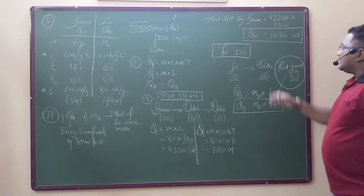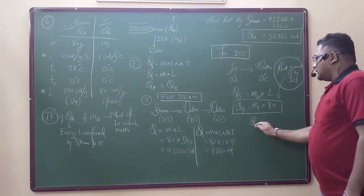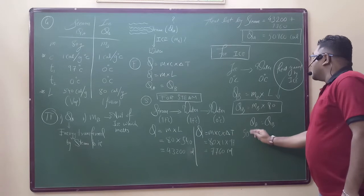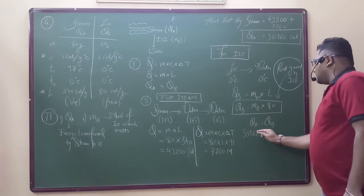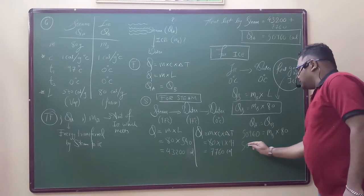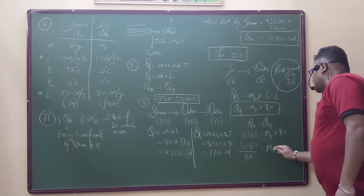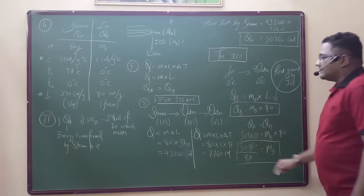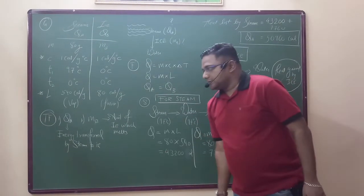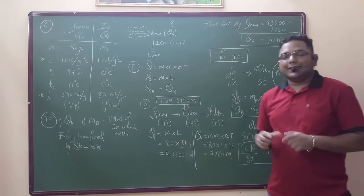Now, using the principle of heat exchange: heat lost by steam equals heat gained by ice, so QA equals QB. QA is 50960. QB is mass of B into 80. So MB equals 50960 divided by 80, and whatever answer you get is MB — the mass of ice — which was asked. And QA, which is 50960, is the energy transferred, which was also asked.